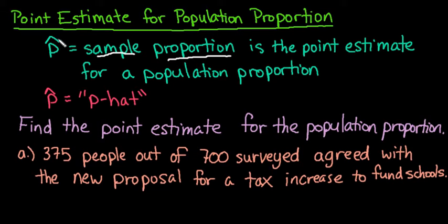The notation that we use for the sample proportion is p hat. We do need to denote it with the hat above it to let us know that it is an estimate rather than an actual population proportion.